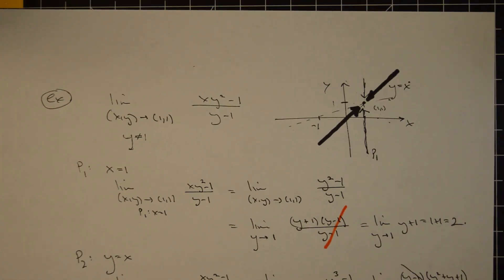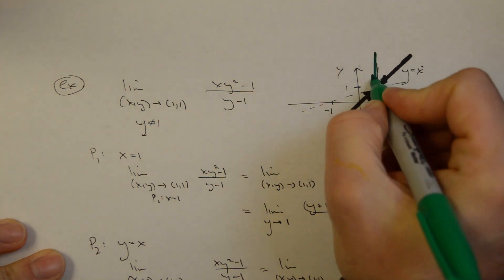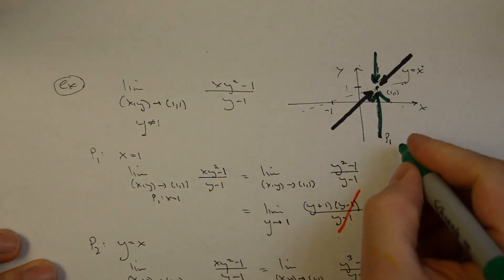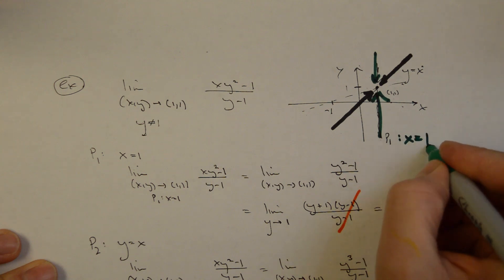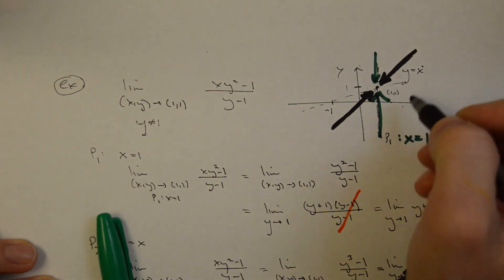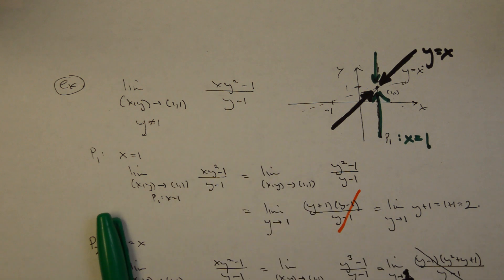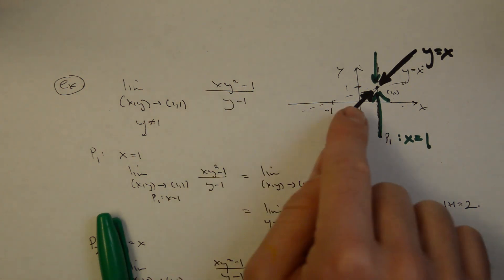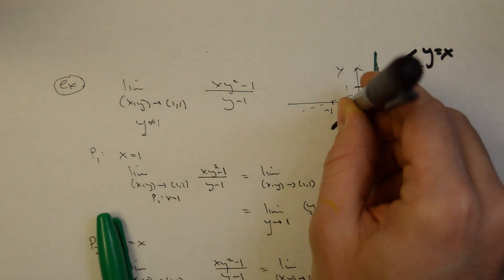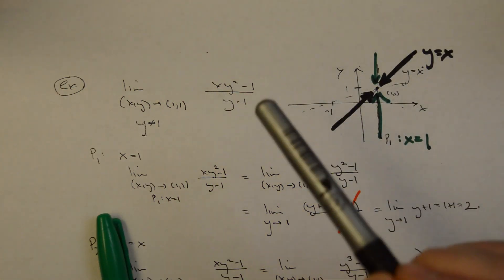Geometrically, we have two different paths both approaching the point (1,1): path 1 along the vertical line x=1, and path 2 along the diagonal y=x. There is a surface in the z (or f) direction — a third dimension. Approaching on path 1 gives one answer, and approaching on path 2 gives a different answer. Hence the limit does not exist.